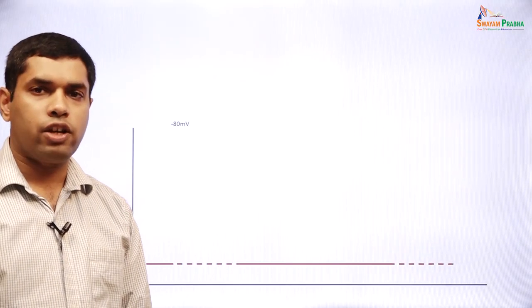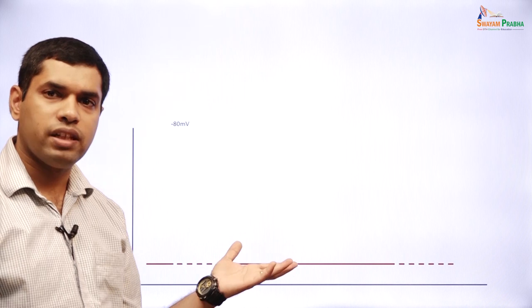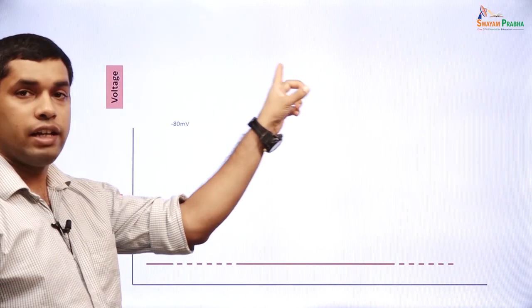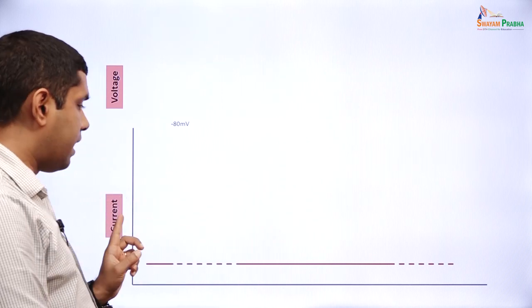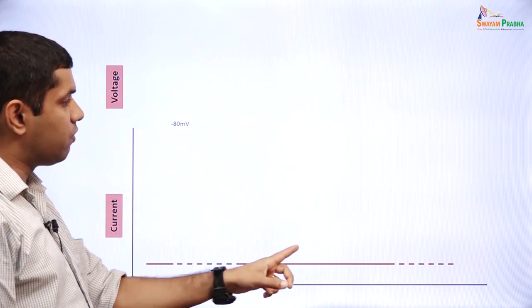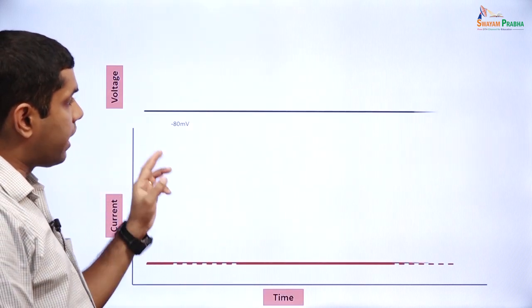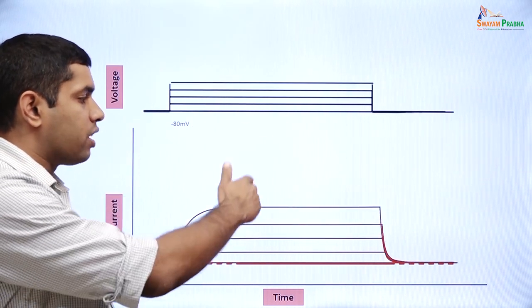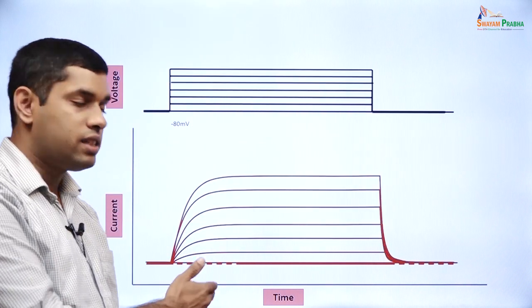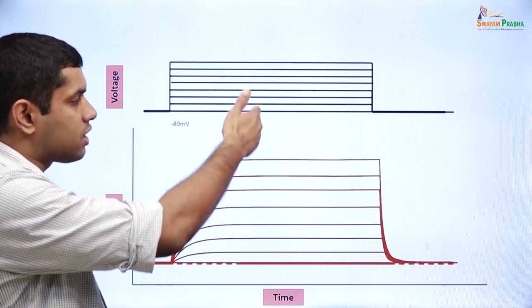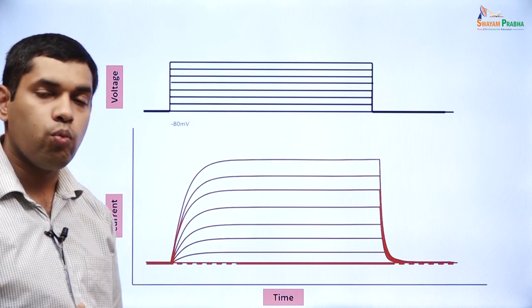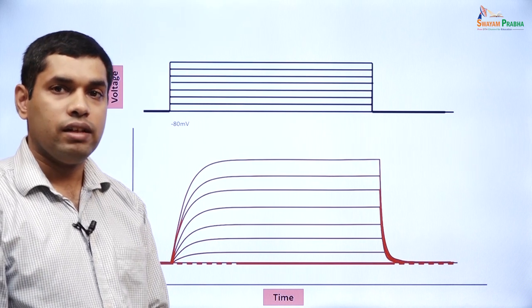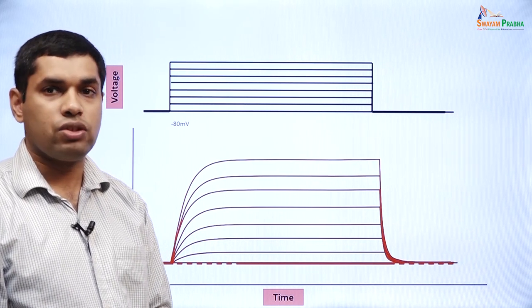A typical recording of these currents is shown in an animation where the voltage applied to the cell is shown on top and the current developed is shown below. As different voltages are applied to the cell, a family of currents is seen, and analysis of these currents helps identify the type of ion channel present on the membrane.